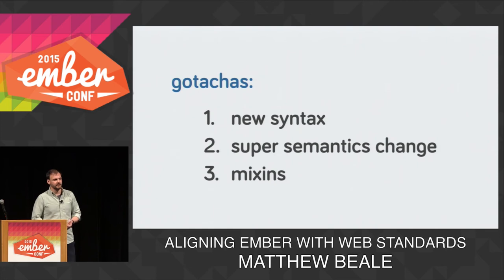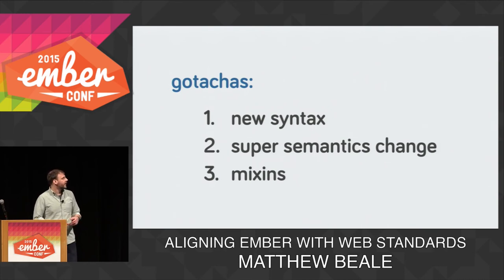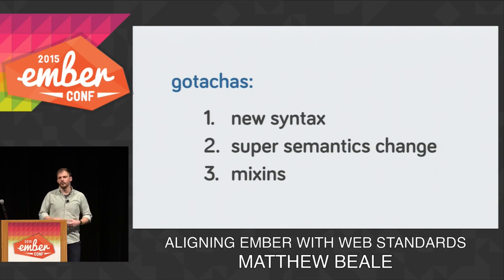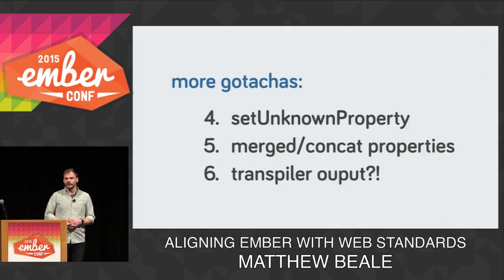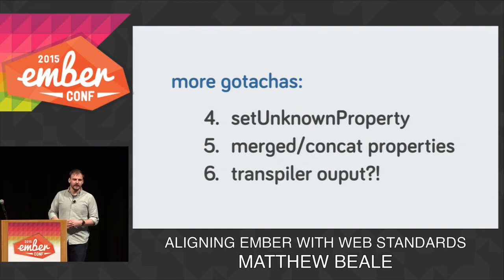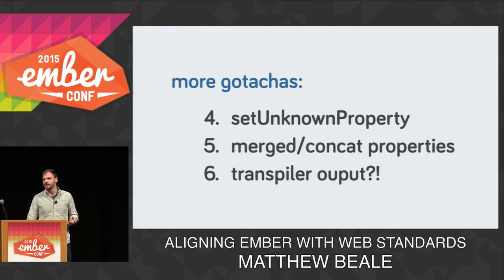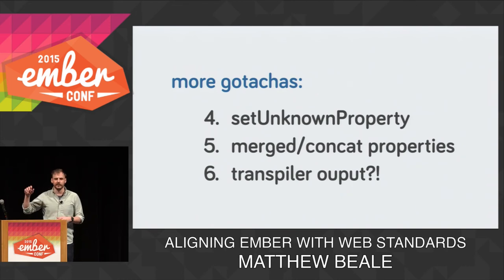There are some gotchas if we wanted to port Ember apps over to this. We have a whole new syntax, which means we need to use a transpiler — we can't polyfill a new syntax. There are changes in the way super behaves, both in syntax and semantics. Mixins have no real story here. There's no set unknown property, which we have in Ember today. Merged and concatenated properties have no allowance but we can probably implement on our own. And we always need to consider the transpiler output — when Babel compiles code, it outputs code used locally in that scope, and we need to make sure we don't ship that code a thousand times for every file in Ember.